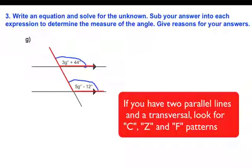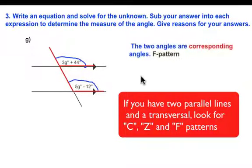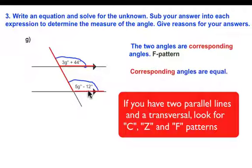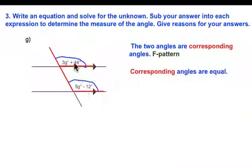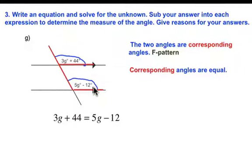Now we have our upside down and backwards F. So again, we're talking about an F pattern. These are corresponding angles and corresponding angles are equal. This is a little bit different than other situations we've seen, but it's still the same idea. What we have to do is set these two angles equal to each other or set these two expressions equal to each other. So we can write this as 3g plus 44 is equal to 5g minus 12.